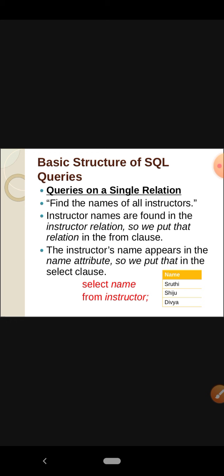The query is: find the names of all instructors. We want to find the names of all instructors — from the table instructor. So we specify instructor in the FROM clause. The relation name is instructor, so we specify the table name instructor after the FROM clause. What we want to find is the names of all the instructors, so we select name and specify the attribute name after the SELECT clause. The query is: SELECT name FROM instructor.